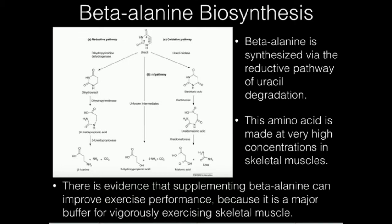Beta-alanine can be synthesized in humans through a fairly interesting pathway. It's actually done through a catabolic pathway — half-catabolic in the sense that it's degrading a pyrimidine, but biosynthetic in the fact that it's actually creating a beta-amino acid. Beta-alanine is unique in the sense that it is pretty much the only main beta-amino acid that can be synthesized de novo in humans, and it turns out that for skeletal muscle, beta-alanine is extremely important.